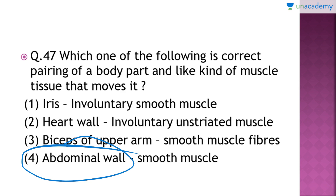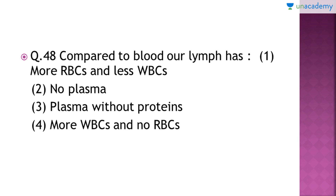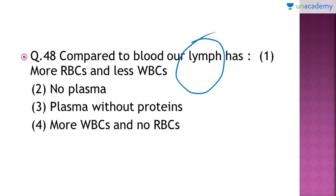Question number 48: compared to blood, what does our lymph have? The right answer is option number four. Lymph is a colorless fluid that contains no RBCs but a greater amount of WBCs and lymphocytes — which is why it is called lymph. It also contains dust particles, bacteria, and various harmful organisms drained by the lymphatic system, and sometimes cancer-causing cells.